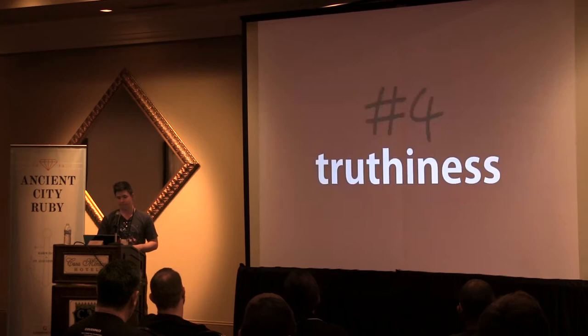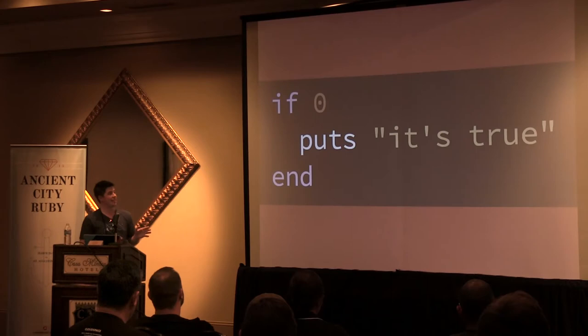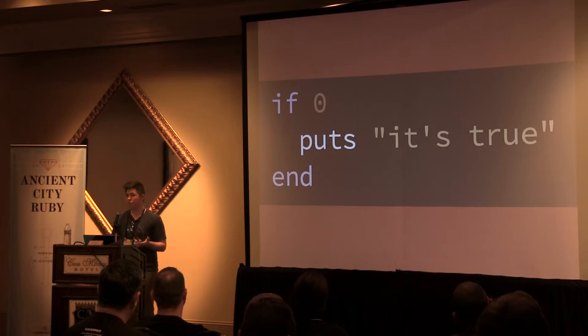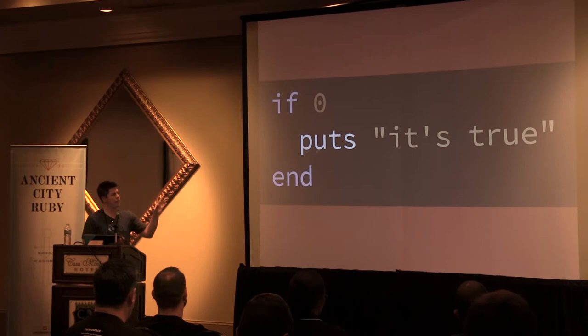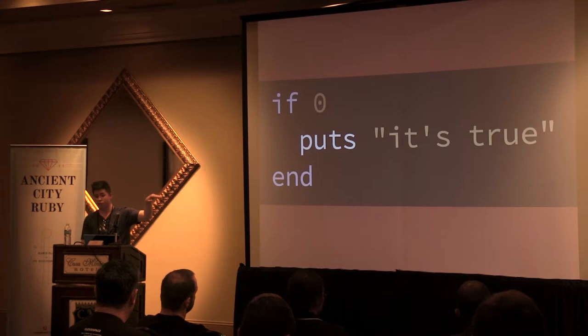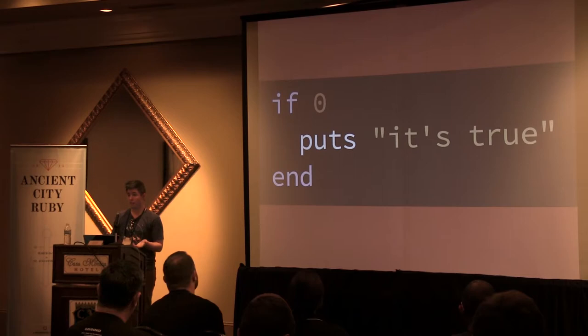Number four: truthiness. In Ruby, all integers have a truthiness to them — they're all truthy by default. If you're coming from other languages like JavaScript, zero is a false value. In Ruby, all integers are truthy. So a conditional like if 0 would evaluate and print a line to the screen. In Swift, that's not the case — Swift has a very strict type system, so you can't do something like that in Swift.